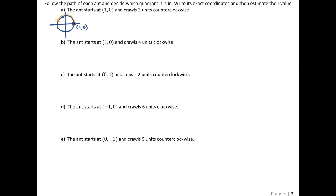We're supposed to go three units, and it is not a multiple of pi, so think carefully. Remember that halfway around the circle is pi, which is approximately 3.14. So we're going almost halfway around the circle. Based on this visual, I can say that we end up in quadrant 2.